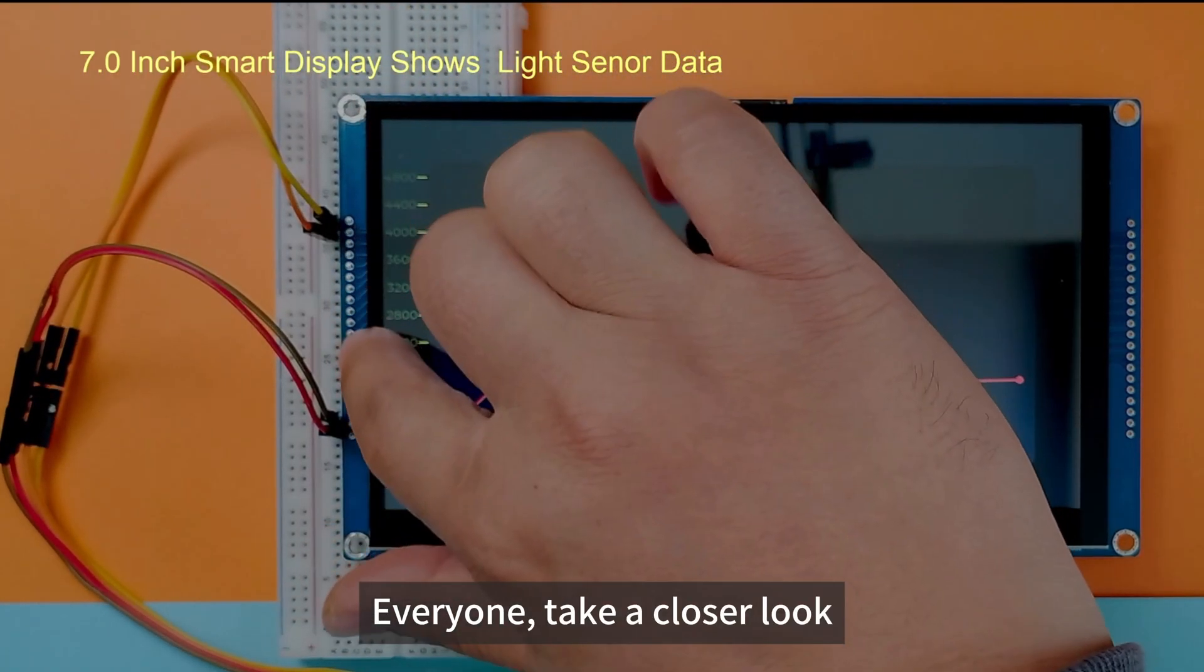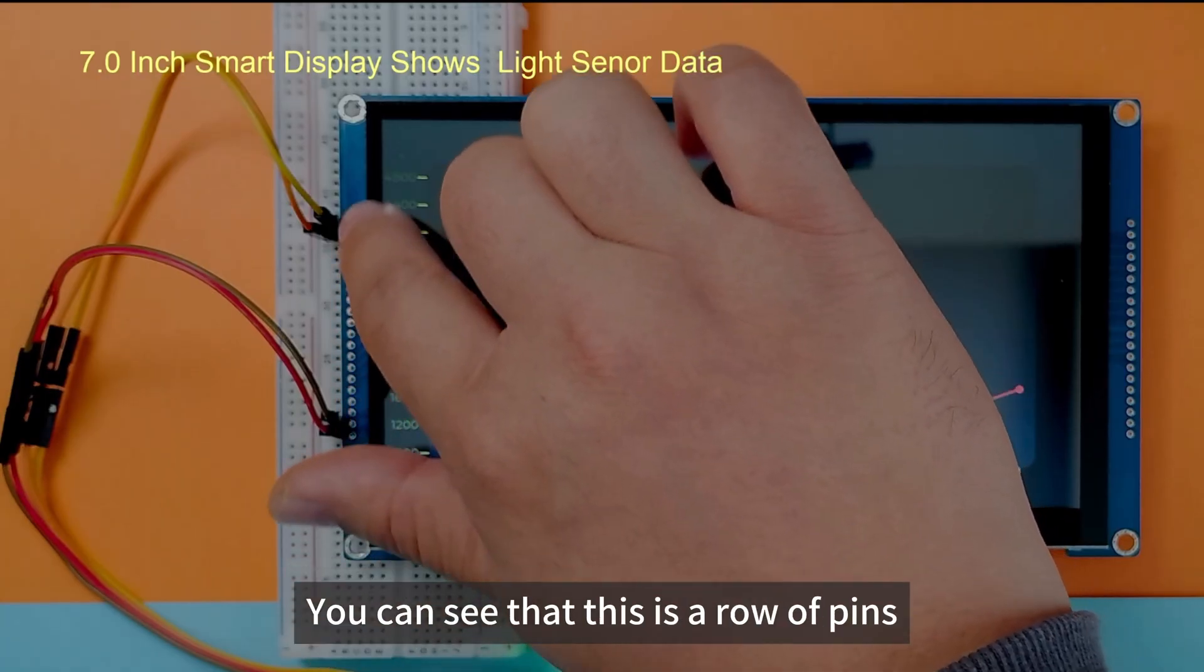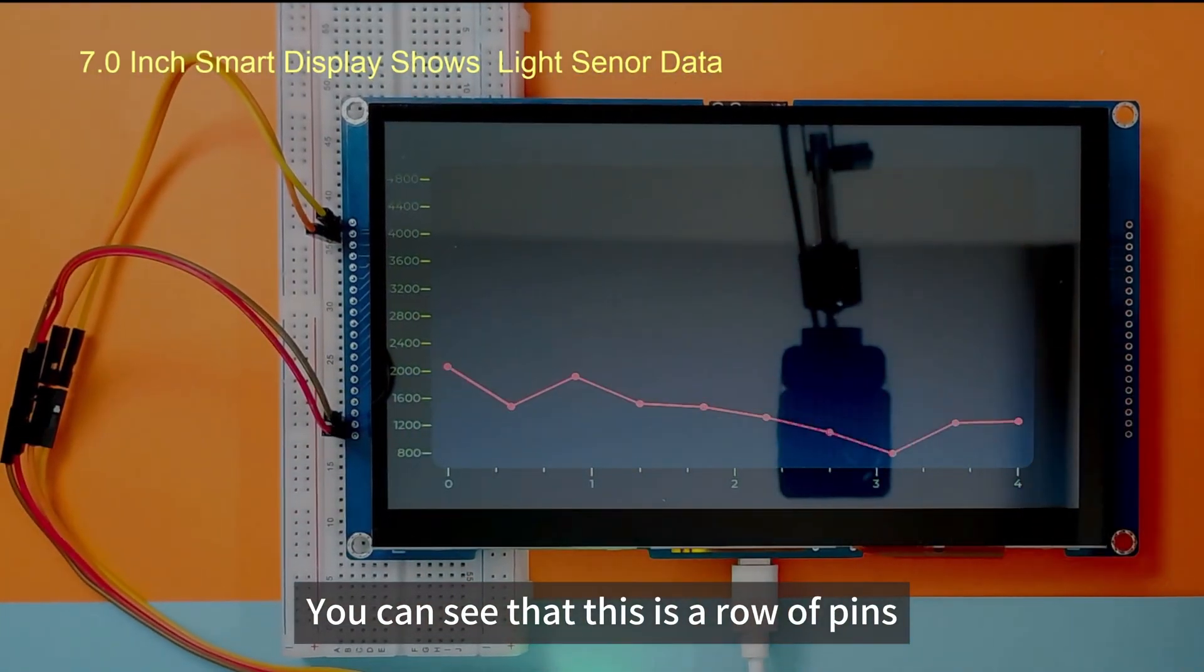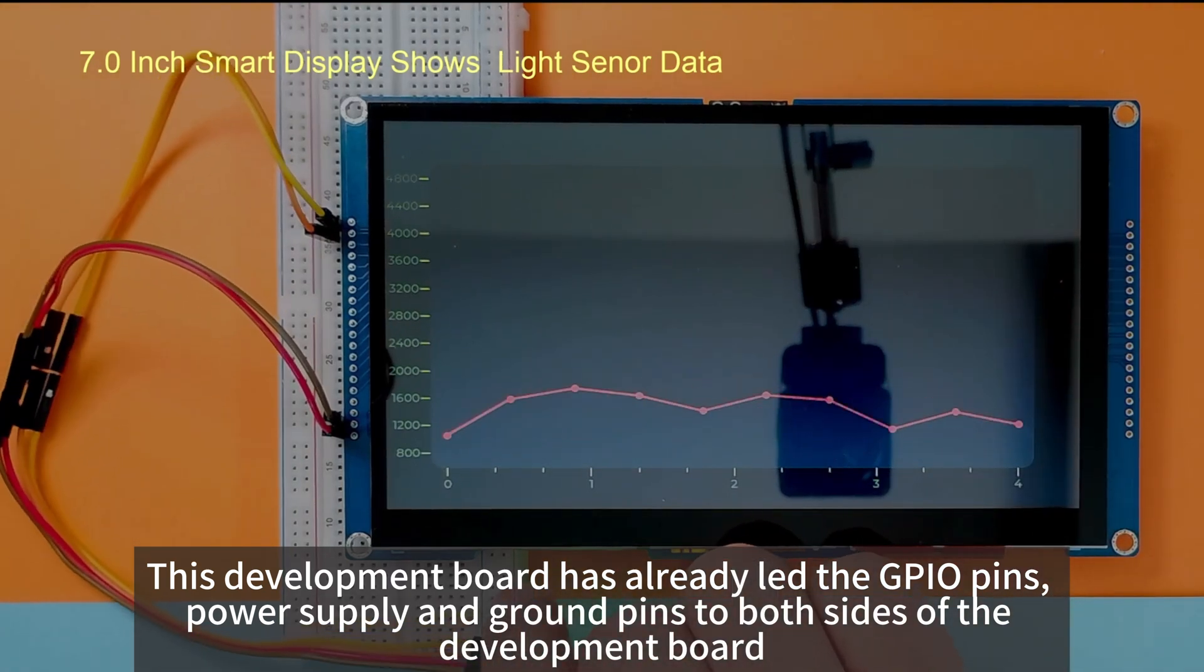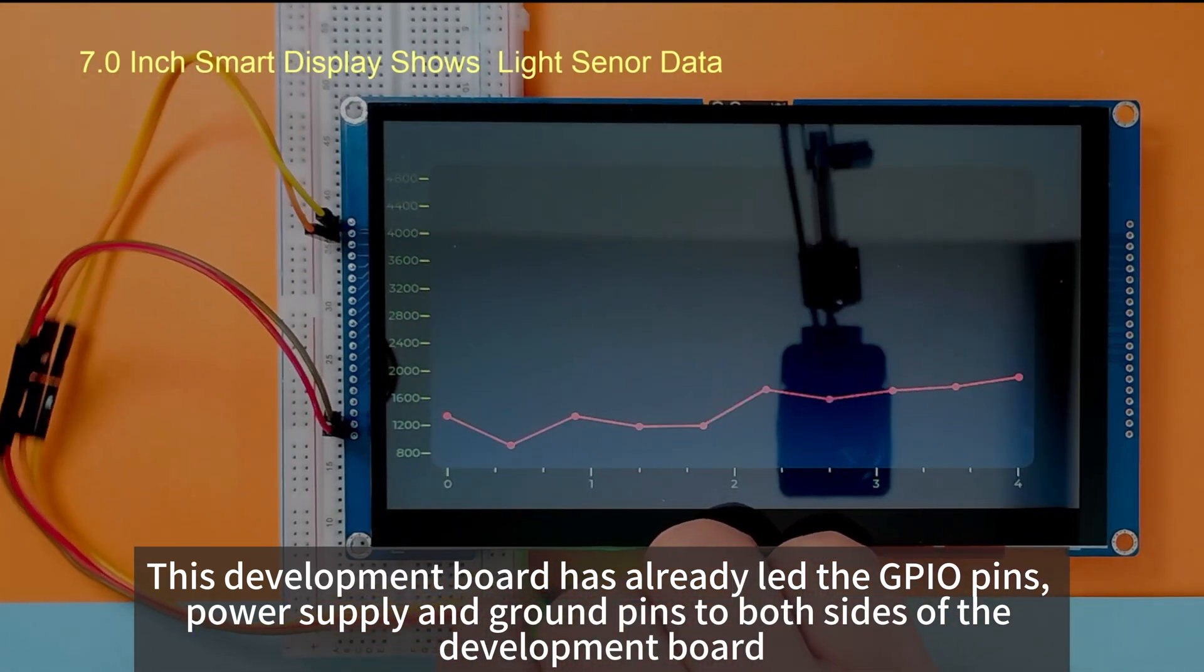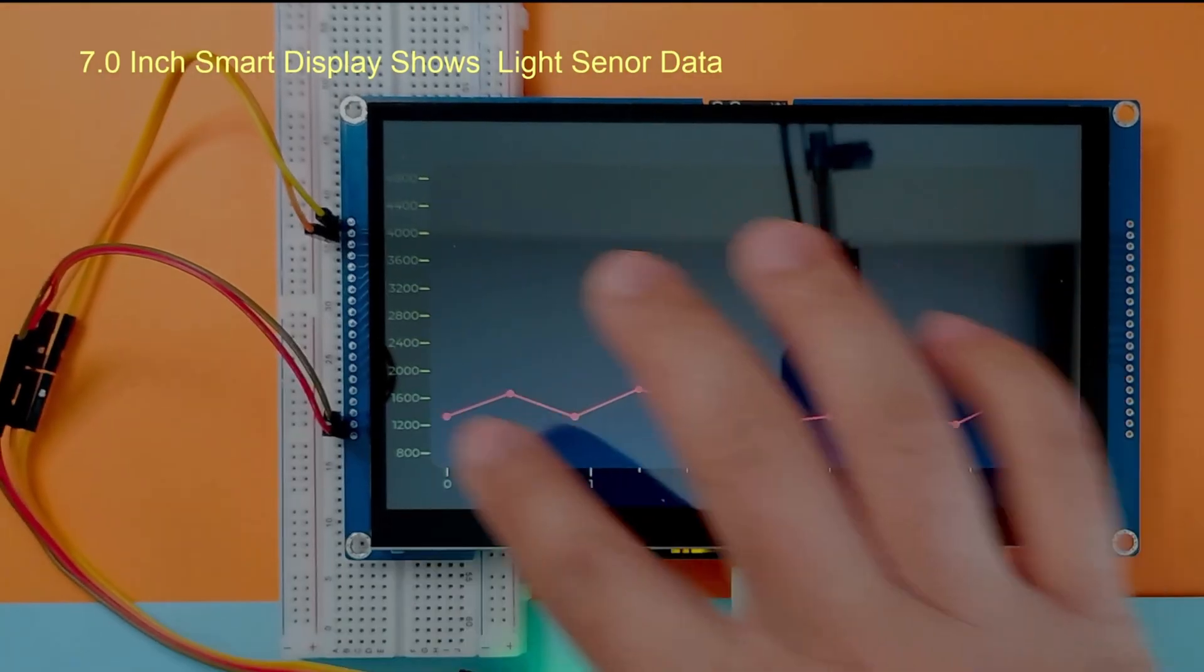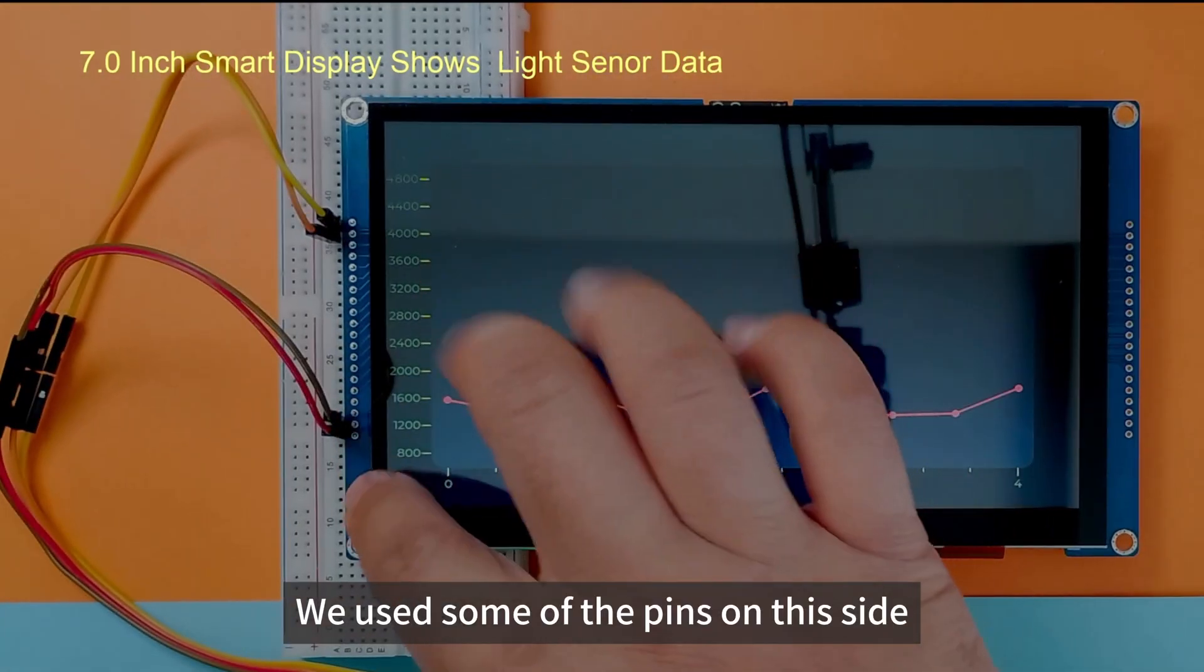Take a closer look. You can see that this is a row of pins. This development board has already led the GPIO pins, power supply and grounding pins to both sides of the development board. We use some of the pins on this side.